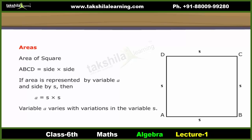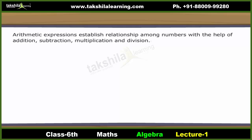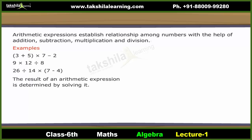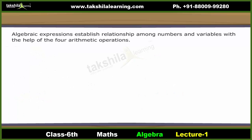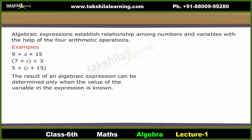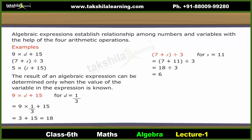Algebraic expressions: Arithmetic expressions establish a relationship among numbers with the help of addition, subtraction, multiplication, and division. The result of an arithmetic expression is determined by solving it. Algebraic expressions establish relationships among numbers and variables with the help of the four arithmetic operations. The result of an algebraic expression can be determined only when the value of the variable in the expression is known. Let us solve each of these algebraic expressions for specific values of the variables.